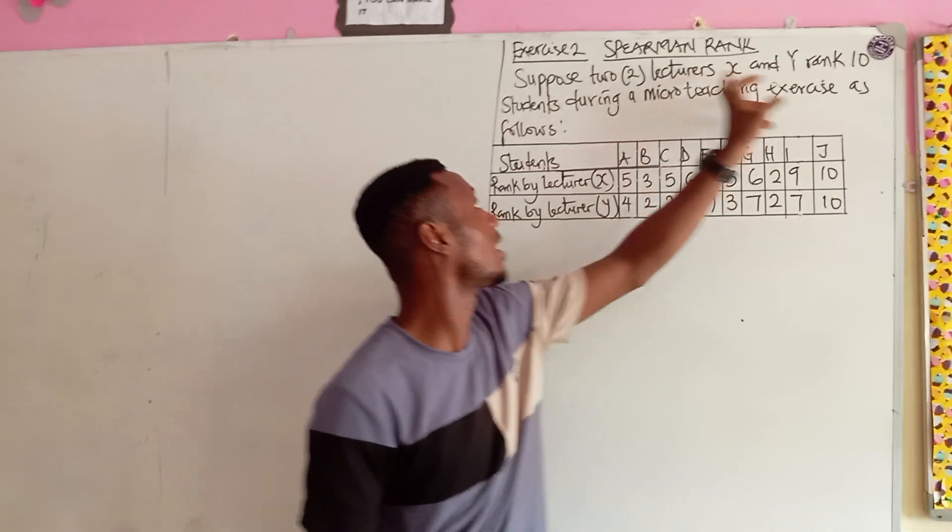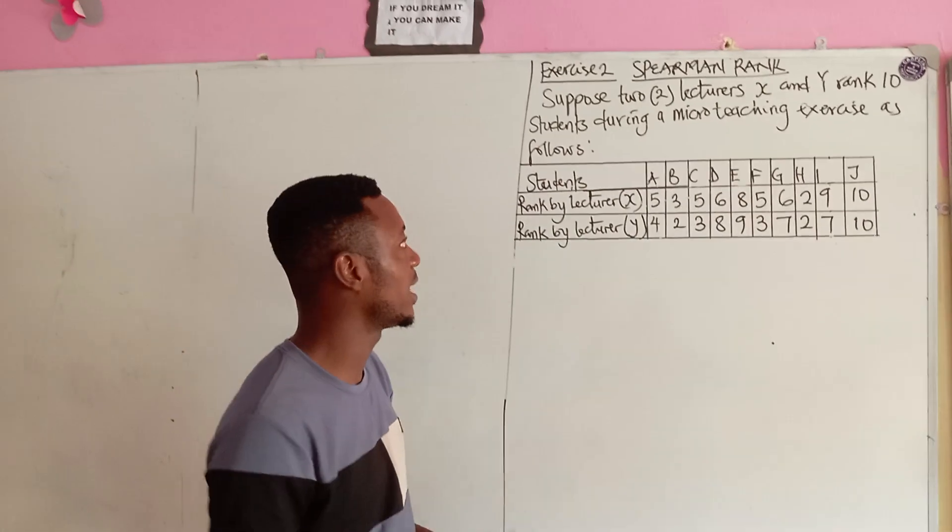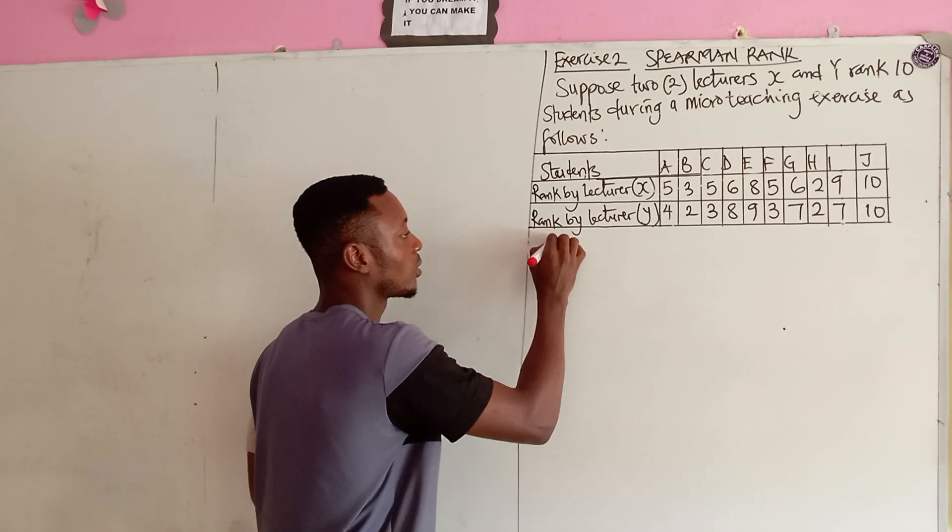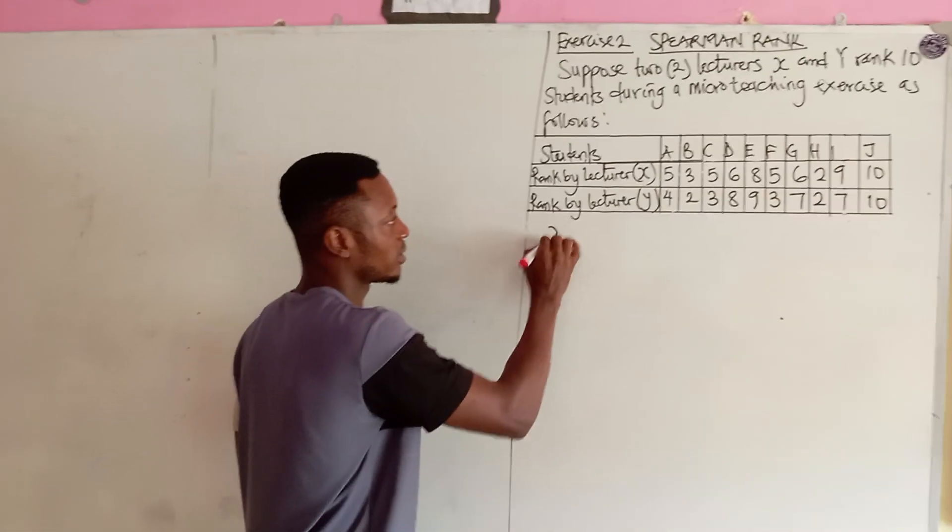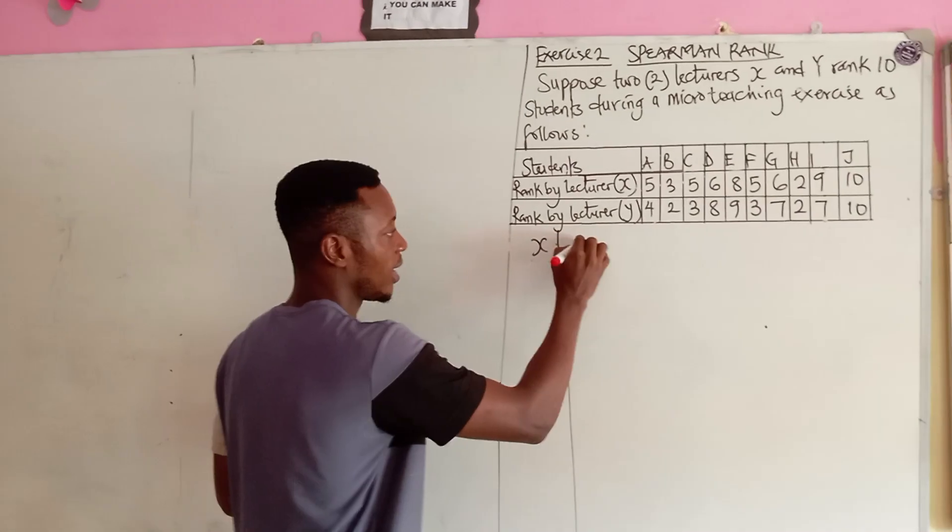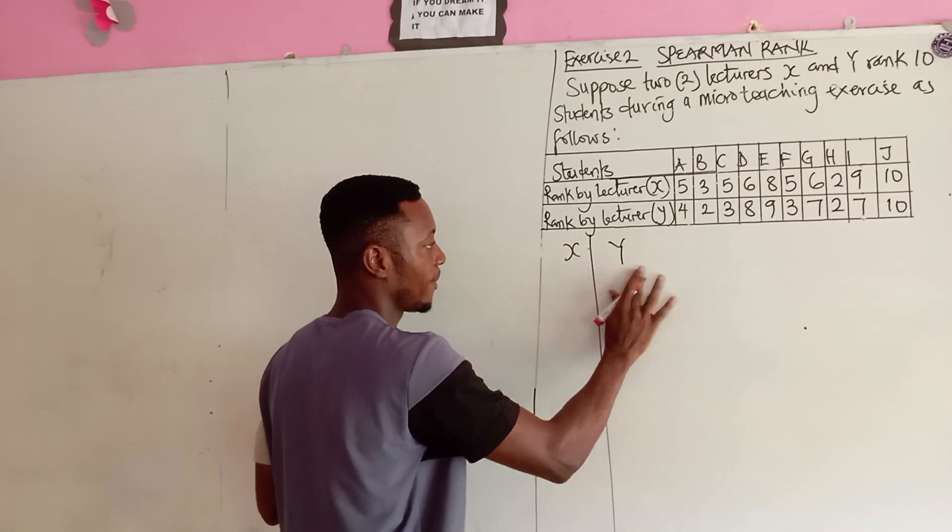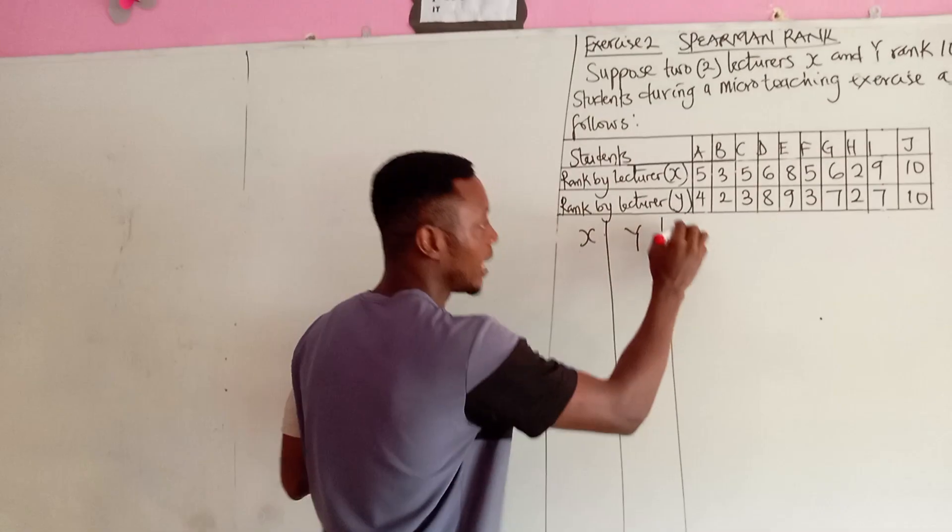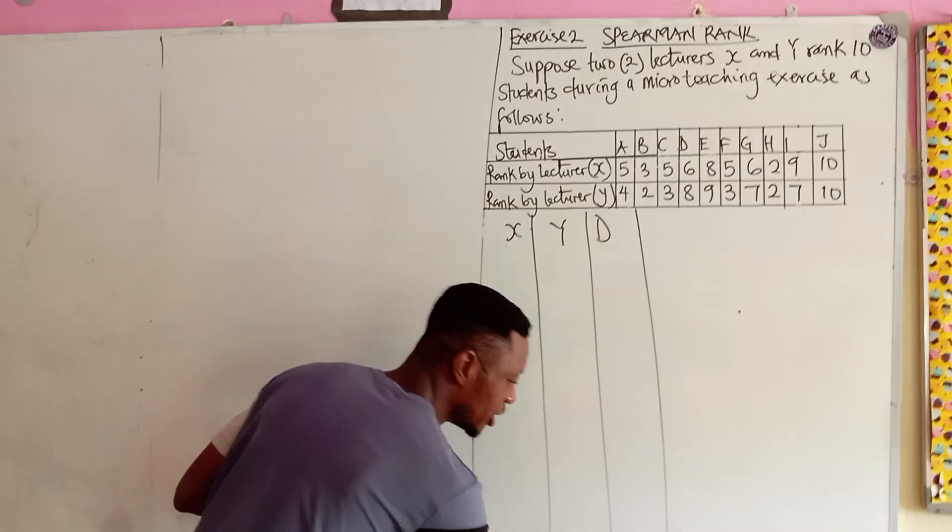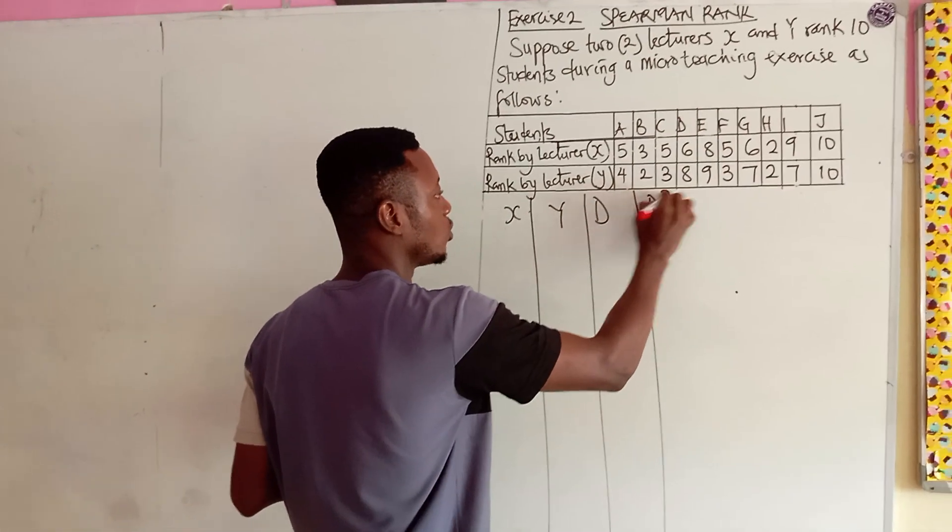So they are ranking 10 students during a micro-teaching exercise as follows. So we have X, we have Y, then I will just go straight to my D, which is difference, then D², which is difference squared.